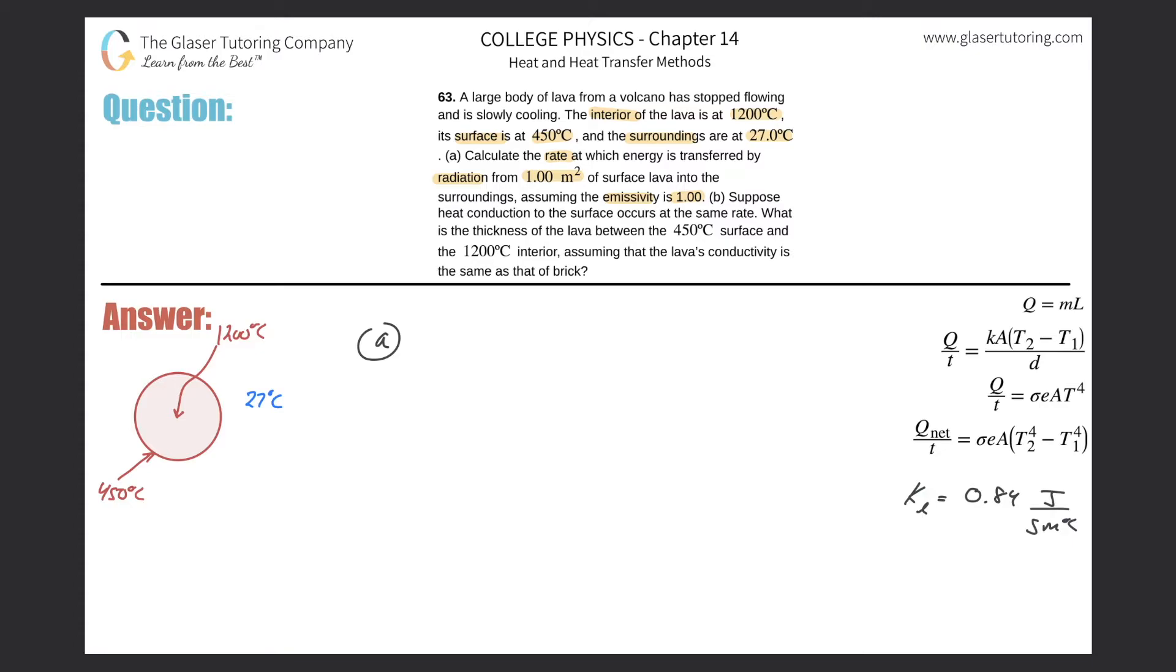So we're really talking about the net rate at which energy is being transferred. Remember that's simply power, and that's going to equal the Stefan-Boltzmann constant multiplied by the emissivity of the material, multiplied by the square area.